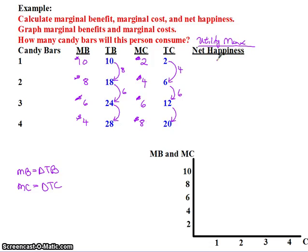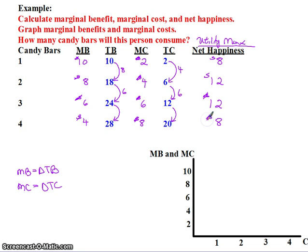Last step: calculate the net happiness. Net happiness is total benefits minus total cost. For the first candy bar it would be $8. Candy bar number two: $18 minus $6 equals $12. Candy bar number three: $24 minus $12 is $12. And finally, candy bar number four: $28 minus $20 is $8. So that's your net happiness.